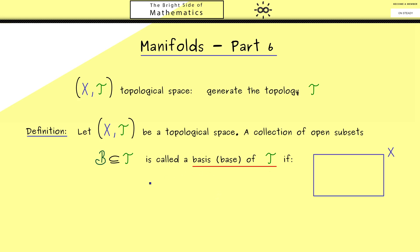There is only one property this basis should fulfill, and this can be nicely visualized here with the set X. Just assume we have an open set U here, so an element of T. And now we should be able to cover the whole set with elements from B. Of course, there could be an overlap here, but we don't hit any points outside of U.